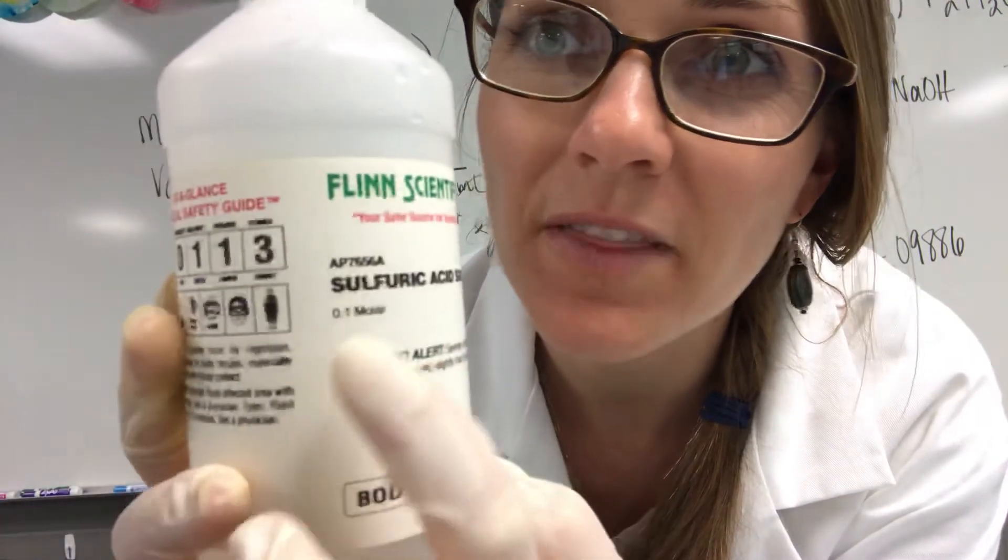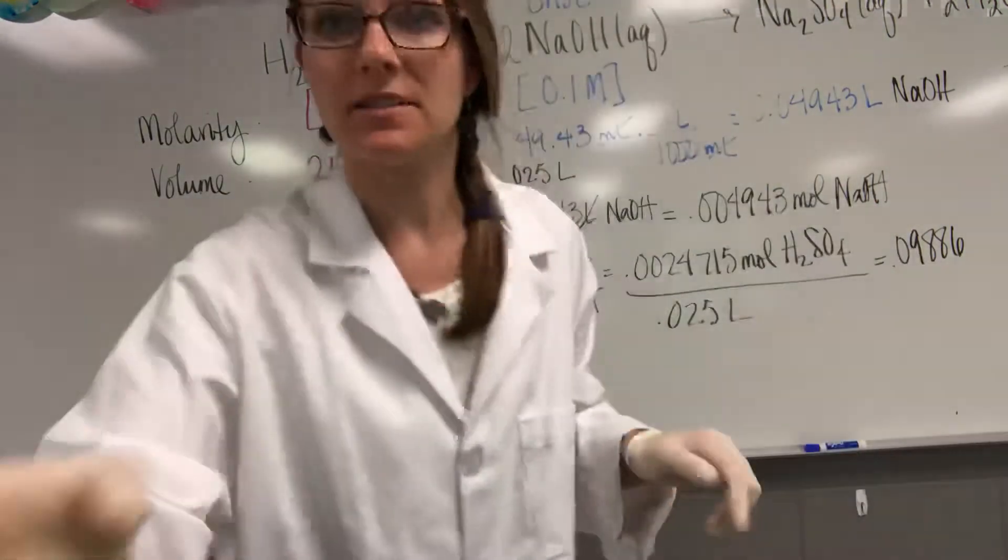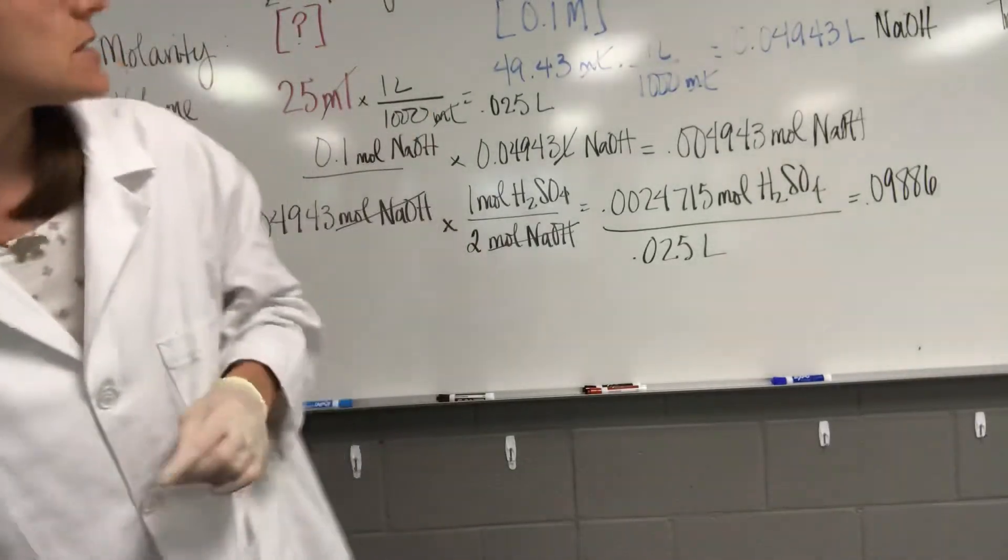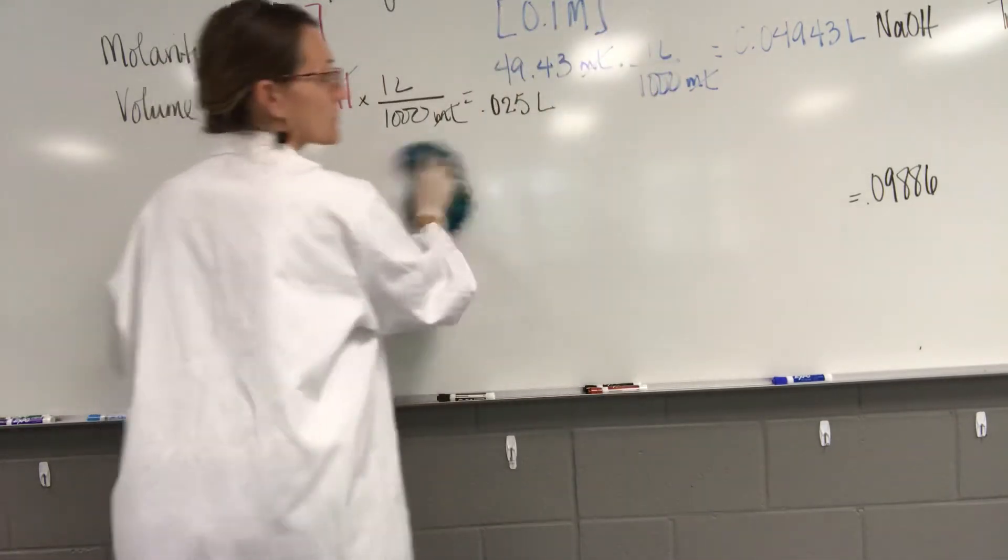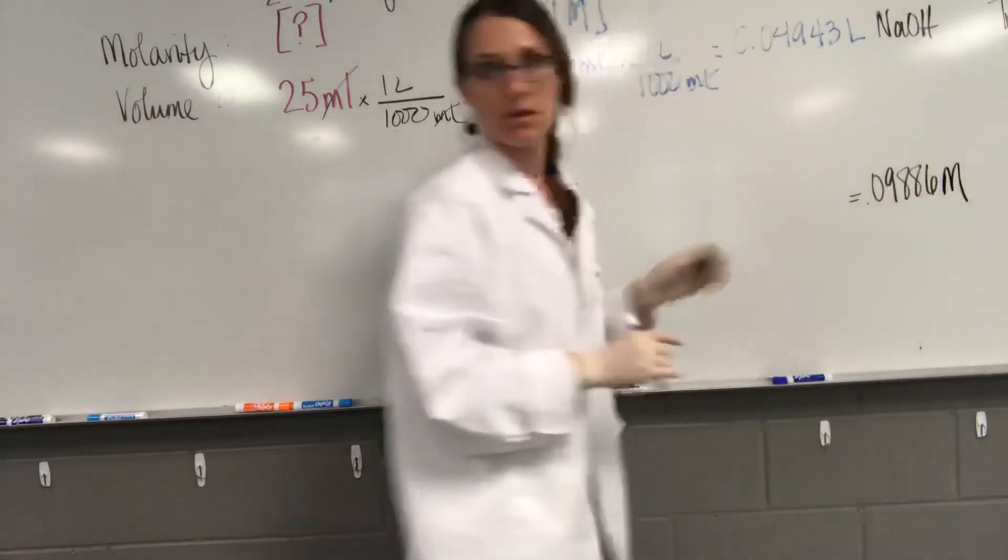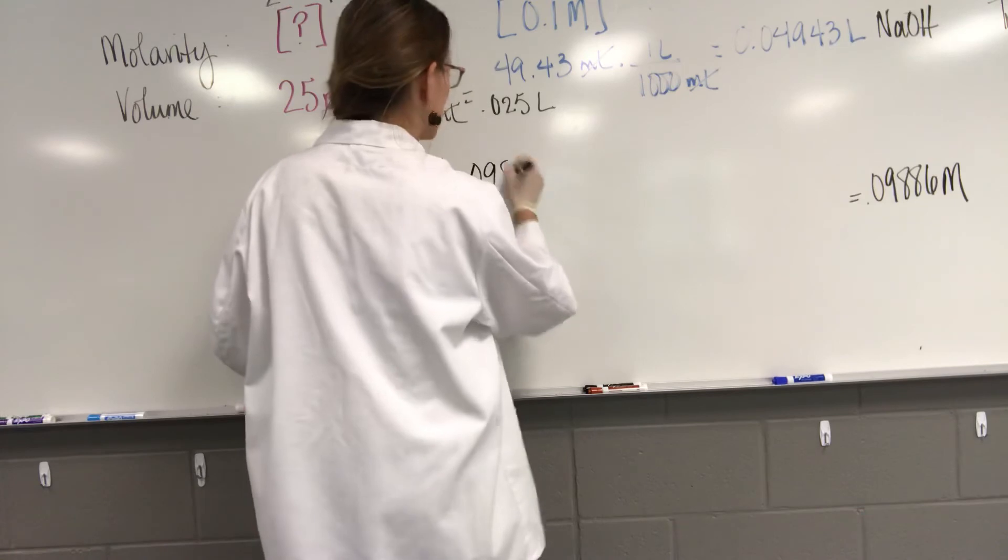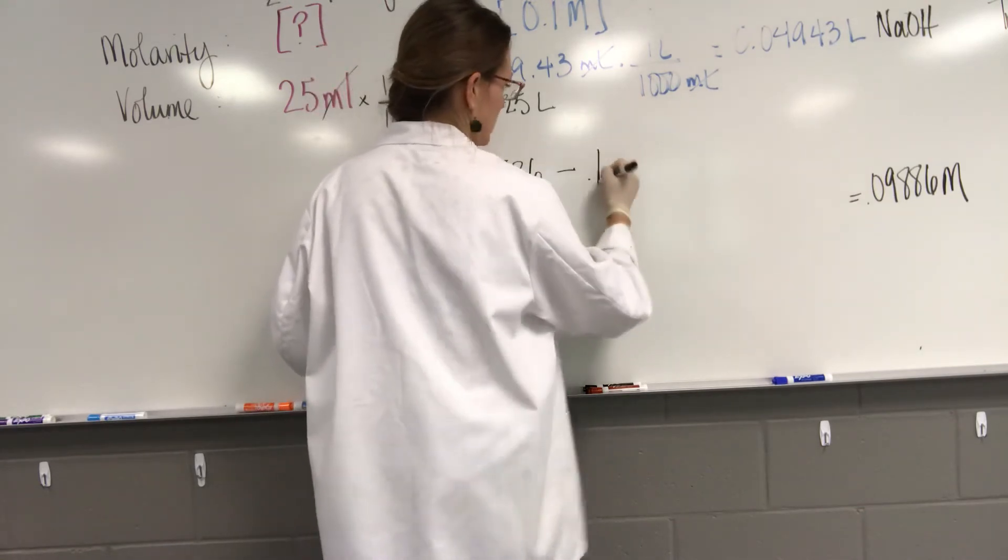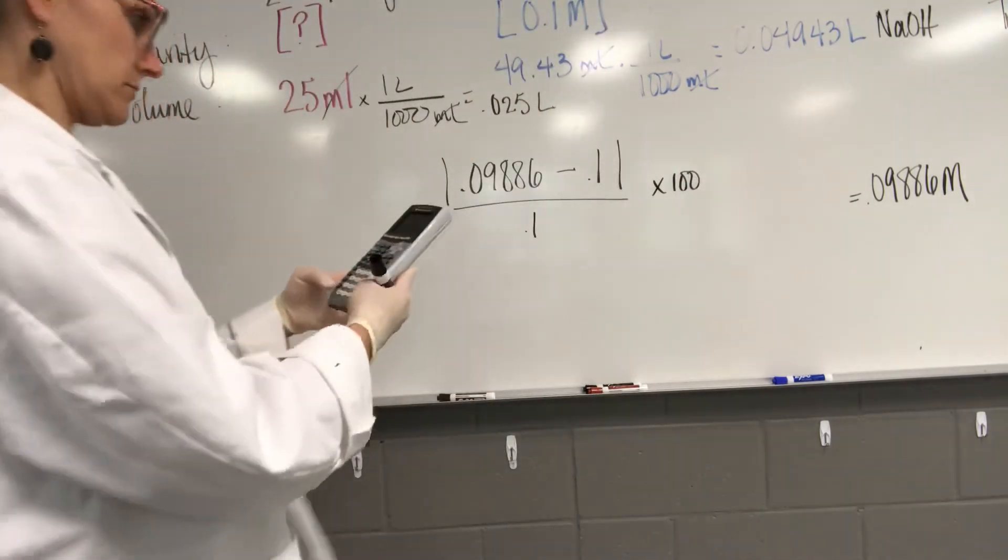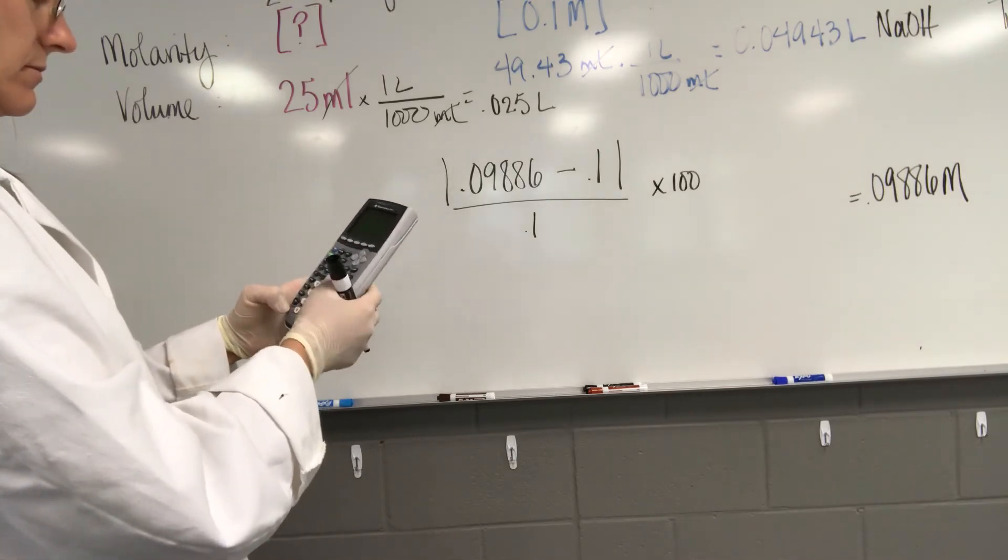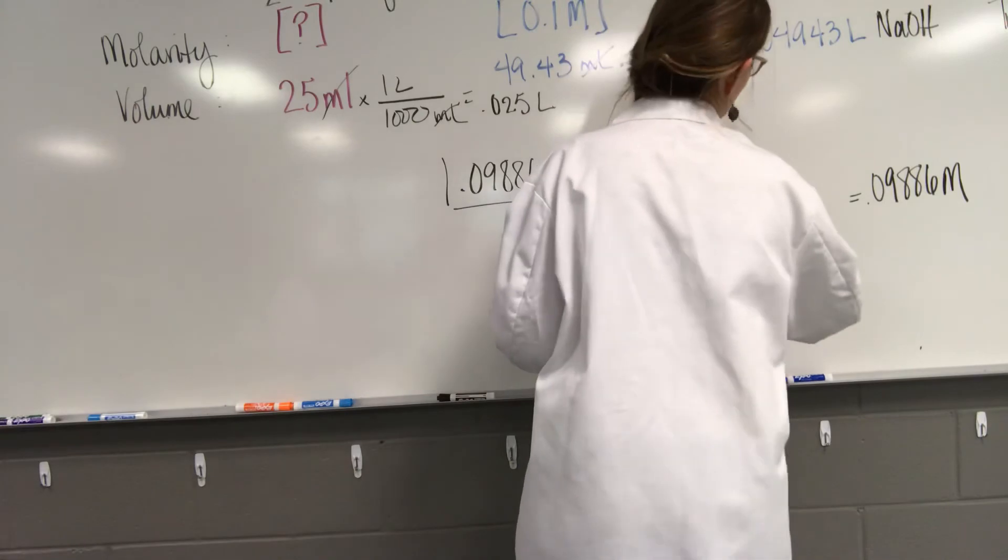So this is the bottle that I poured that sulfuric acid out of and it is 0.1 molar sulfuric acid. So we could pretty quickly calculate our percent error. Remember percent error is absolute value of measured minus accepted over accepted times 100. So we would have about 1.14 percent, not bad.